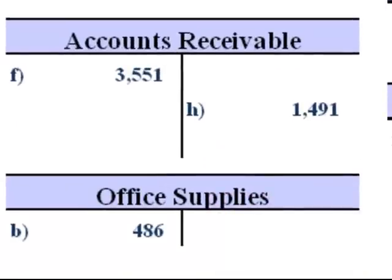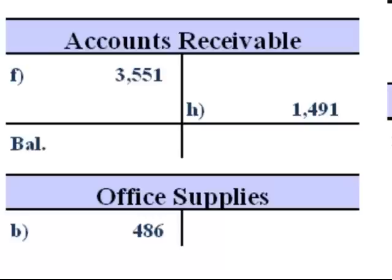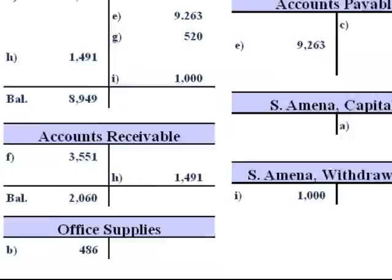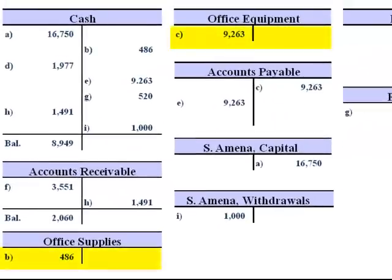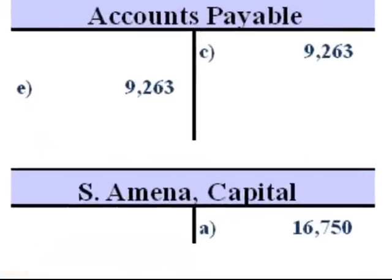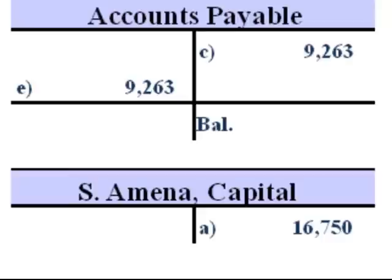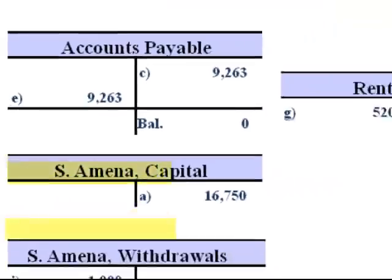Accounts Receivable has $3,551 in debits, less the credits of $1,491, giving a net debit balance of $2,060. Accounts Payable has $9,263 in credits and $9,263 in debits, giving us a zero balance. I'm going to list this as a credit balance, as accounts payable is a liability, and liabilities have normal credit balances.